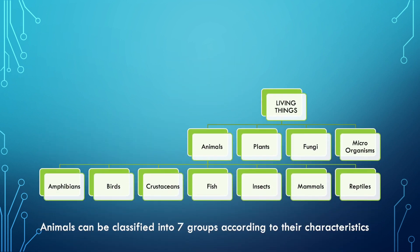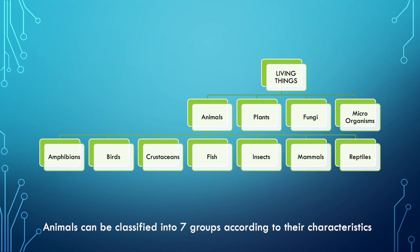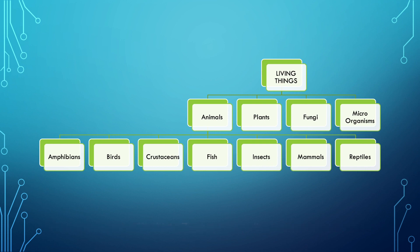Animals can be classified into 7 groups according to their characteristics: amphibians, birds, crustaceans, fish, insects, mammals and reptiles.